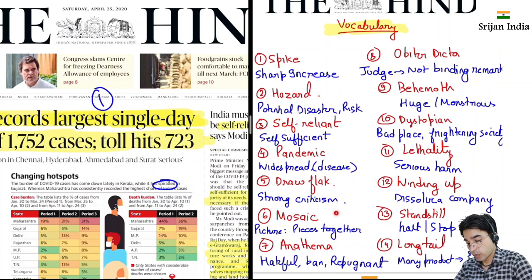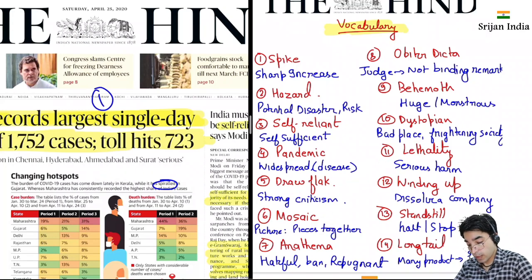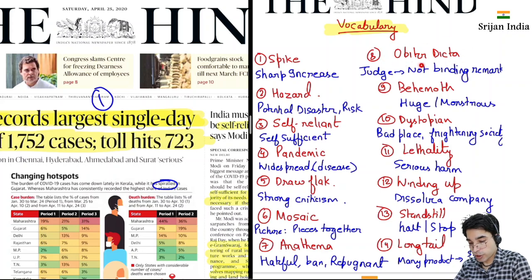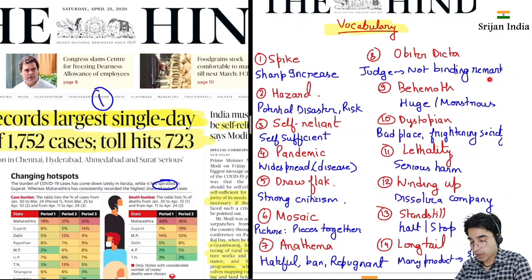Mosaic matlab ek picture hai jis mein bahut sare pieces together hai, jis se India mein bahut sare different diversity hai — that presents a beautiful mosaic. Anathema ka meaning hota hai hateful, ban, repugnant. Yeh ek term hota hai judiciary mein — orbiter dicta. Iska meaning hota hai jab judge judgment pass kar rahe hai, toh jho not binding part hota hai remark ka, that is called orbiter dicta.